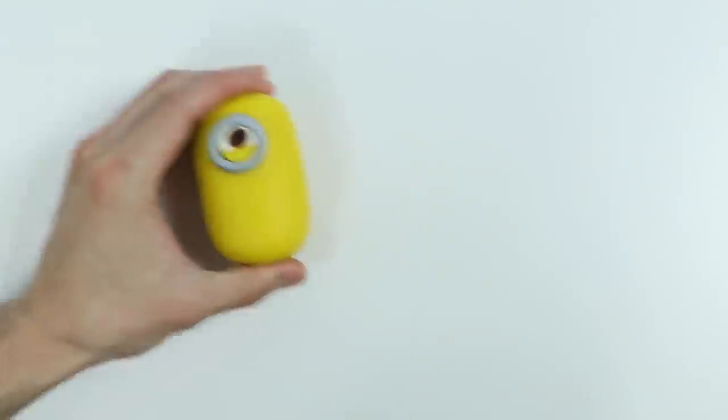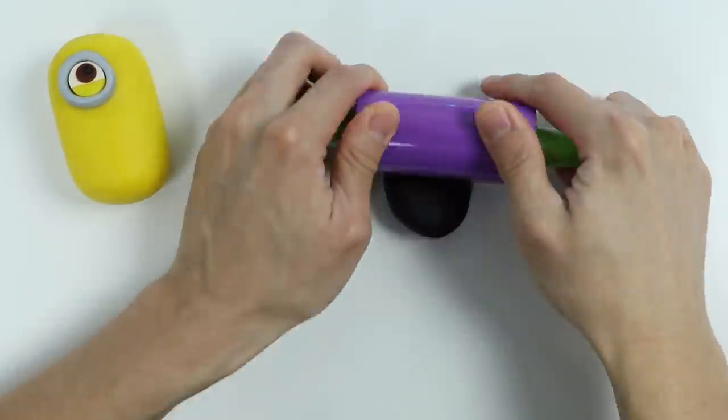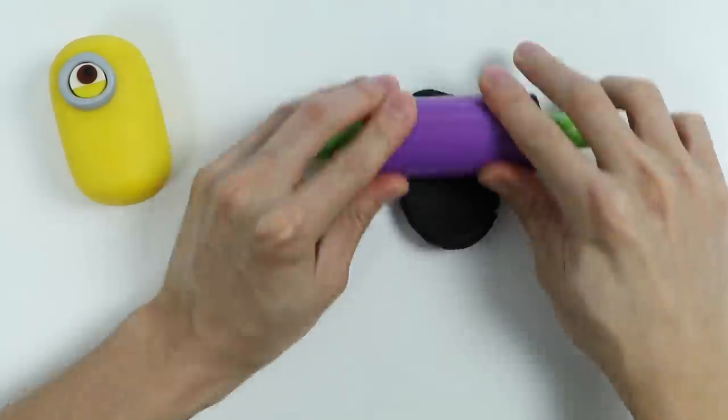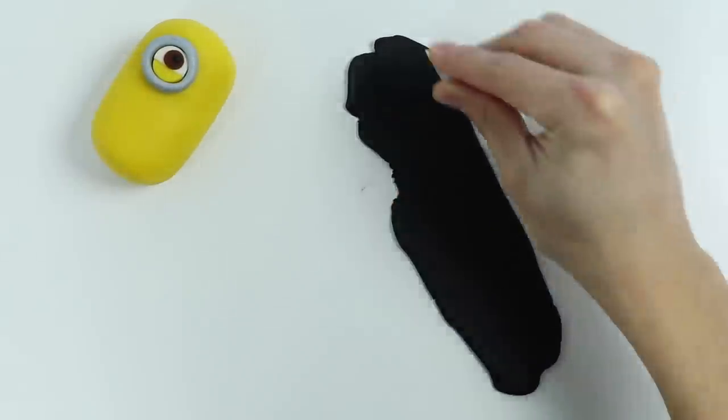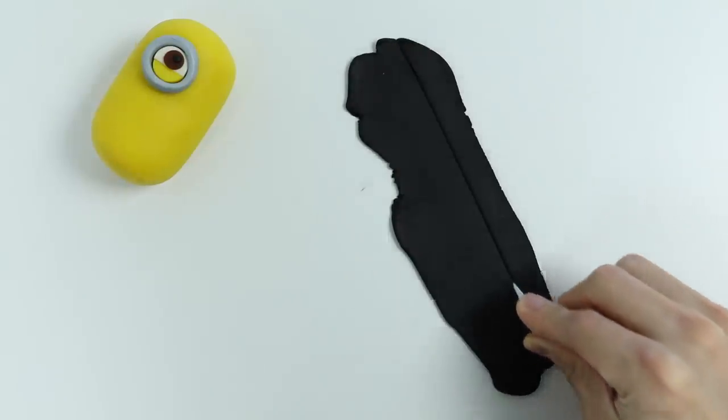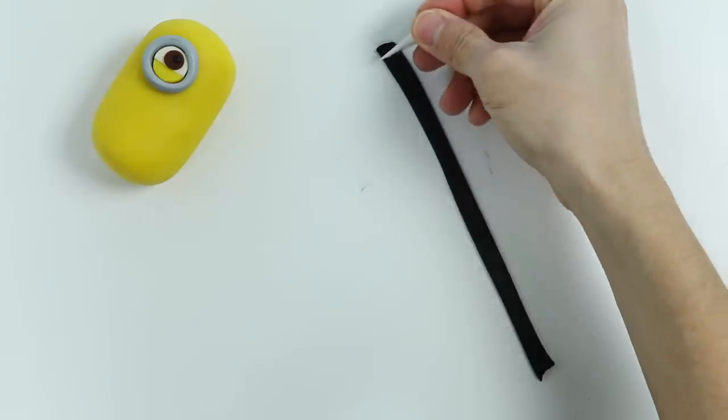Perfect! Alright, now let's make the strap for his goggle. Roll out some black Play-Doh. Now let's use this tool to make a thin line. Perfect! Let's cut the end right here.